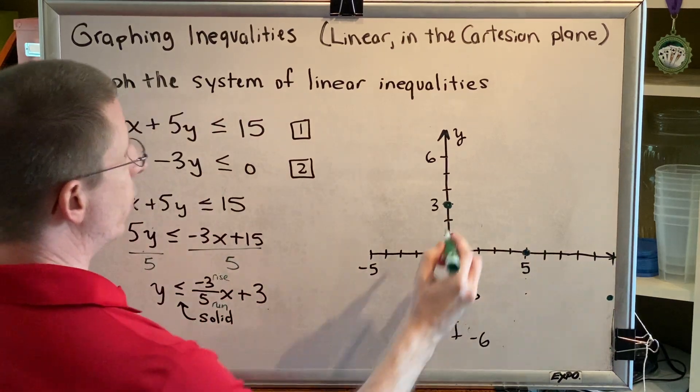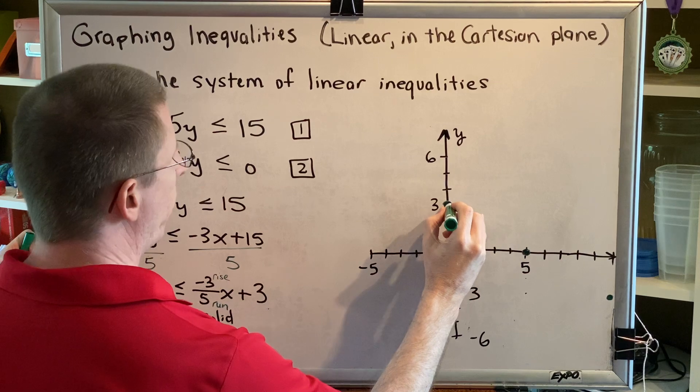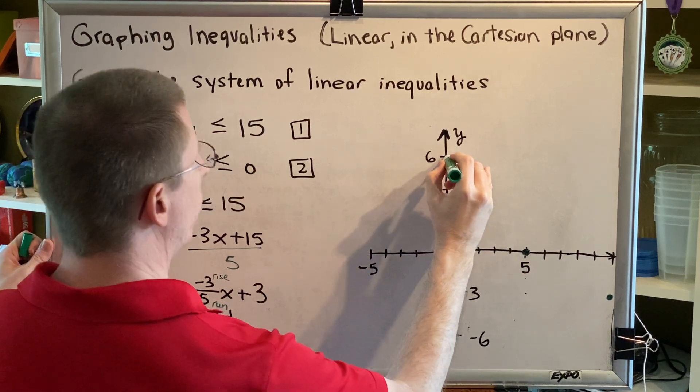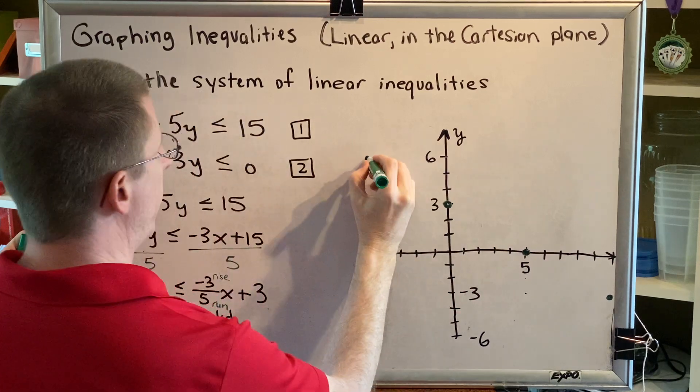Once you've gone as far as you can, go back to the y-intercept and do the opposite. This means we would go up 3 and 5 to the left. Once you've gone as far as you can in both directions, you're ready to graph your line.